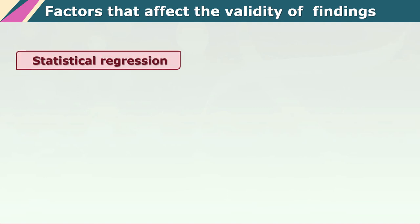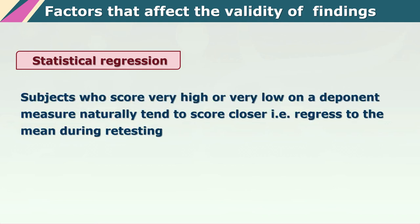Another very interesting phenomenon is called statistical regression. What happens in this? If you repeatedly go on taking measures from a particular group of subjects, there is a very high chance that these scores start drawing towards the mean — this is called statistical regression towards the mean. As you repeatedly collect more and more scores from the subjects, they will all start appearing to be closer and closer to the central tendency of the entire set of scores, and this definitely is going to affect the data emerging from the experiment. So one has to take care of statistical regression by ensuring that not too many repetitions of measures are actually being taken.